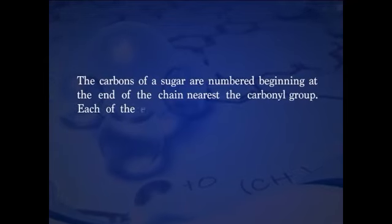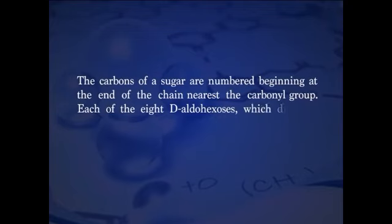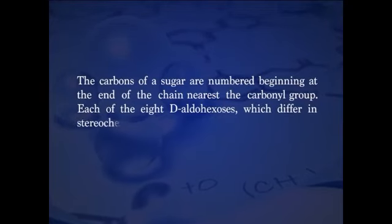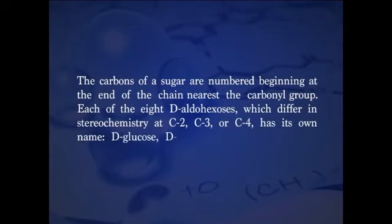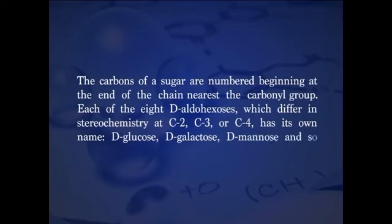Each of the eight aldohexoses, which differ in stereochemistry at C2, C3, or C4, has its own name: D-glucose, D-galactose, D-mannose, and so forth.